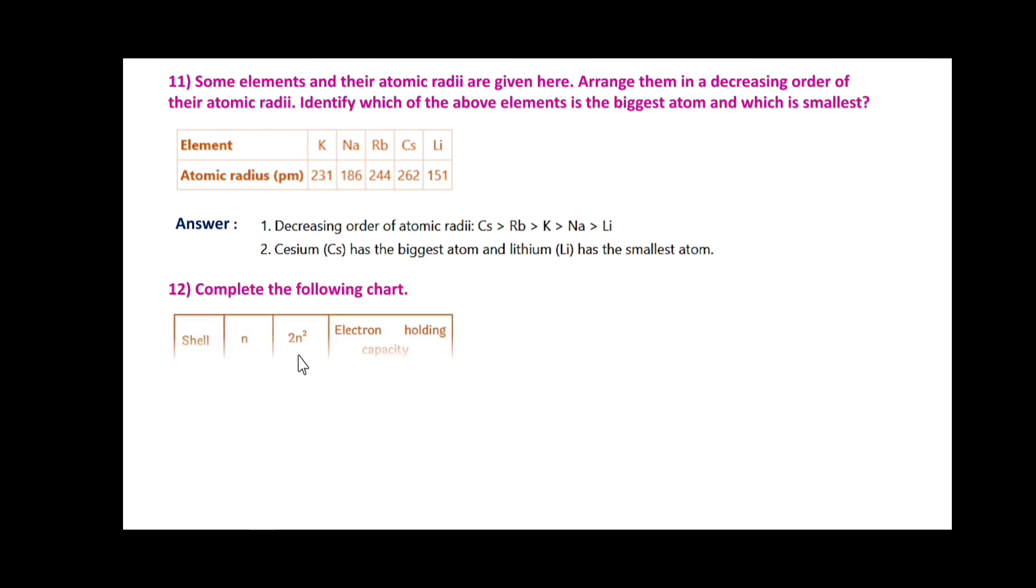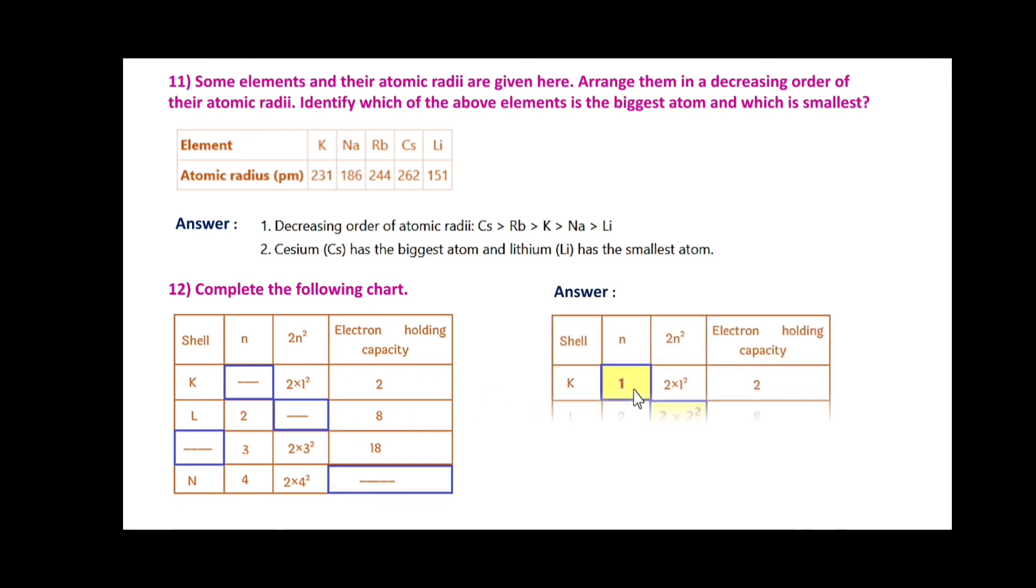Complete the following chart. Shell N, 2N², electron holding capacity. Here K, L are given, we have to find the next values. First shell K, N = 1, 2×1² = 2.